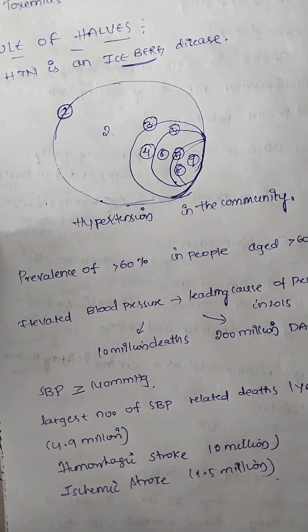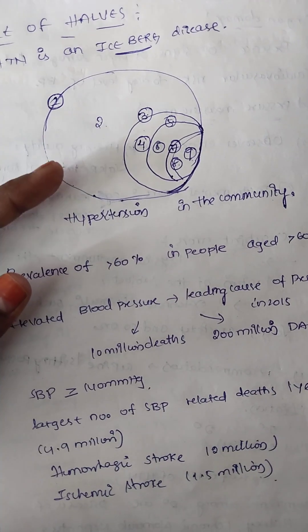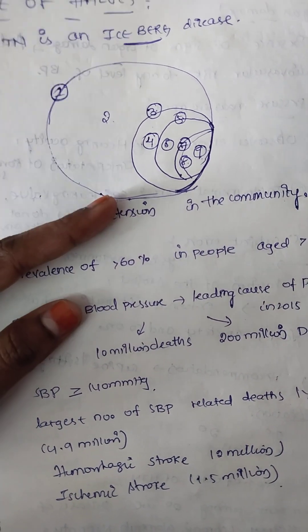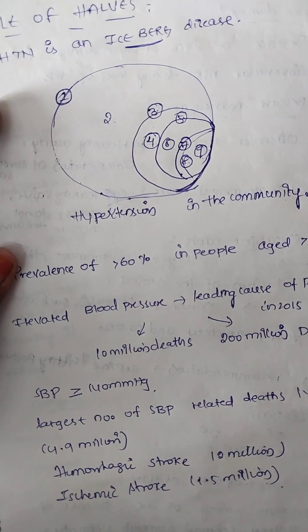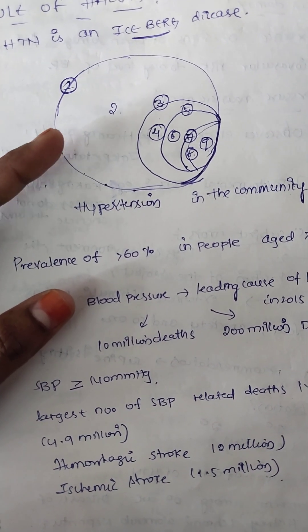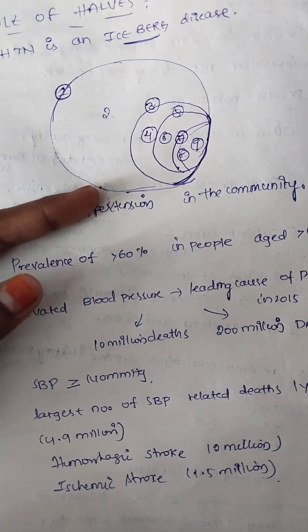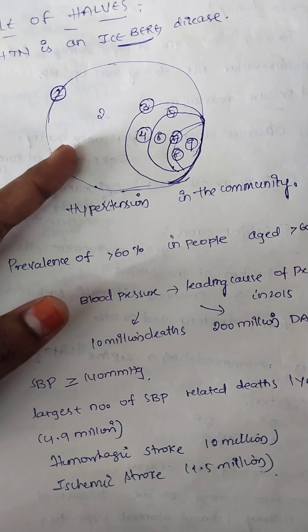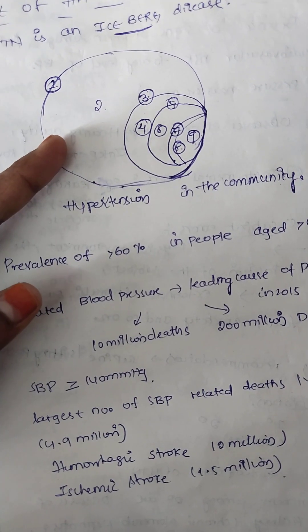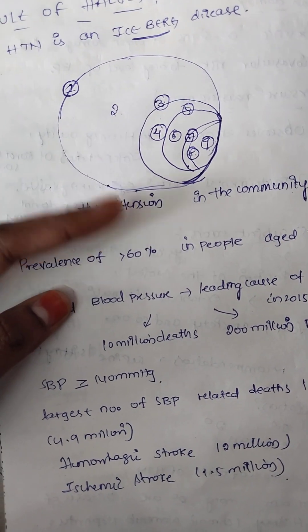What is the rule of halves? In the whole community, half are normotensive individuals. In those, half have hypertension. In hypertension cases, half are diagnosed and half are undiagnosed. Among the diagnosed, half are on treatment and half are untreated. Among those on treatment, half are properly treated and half are not treated properly. This is the rule of halves.